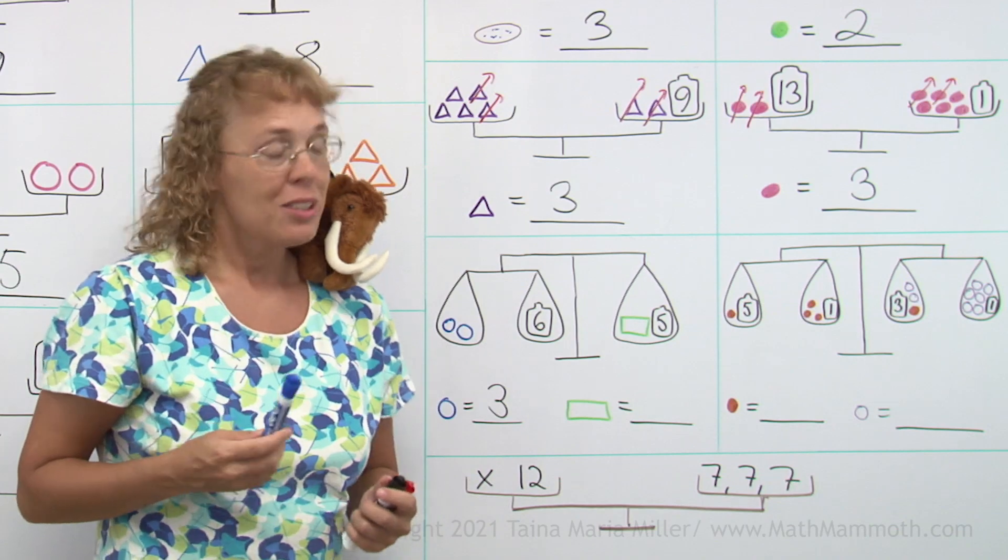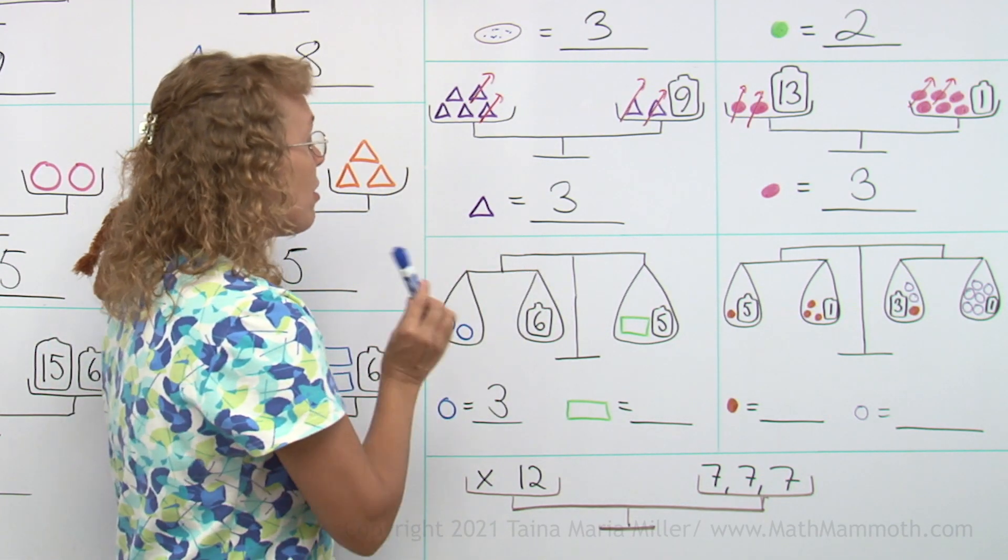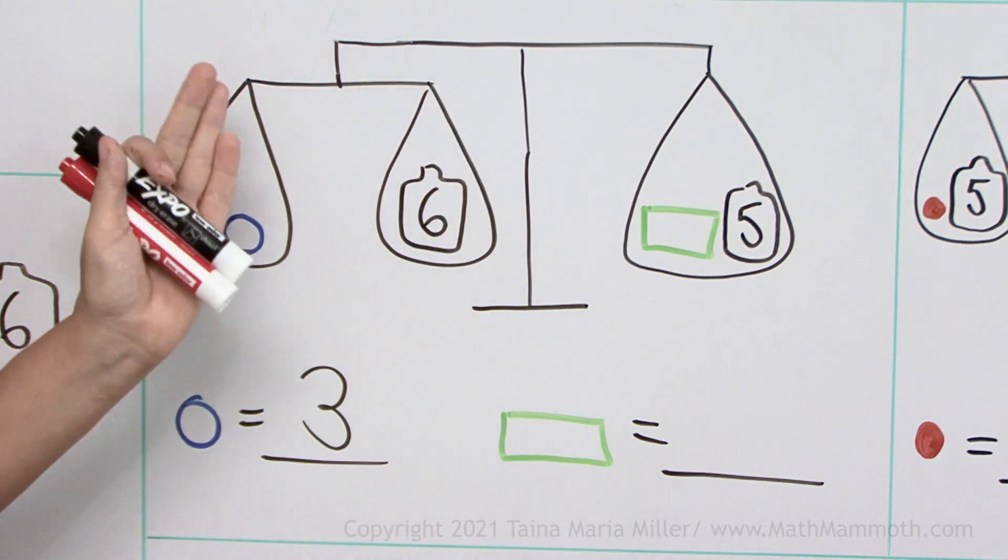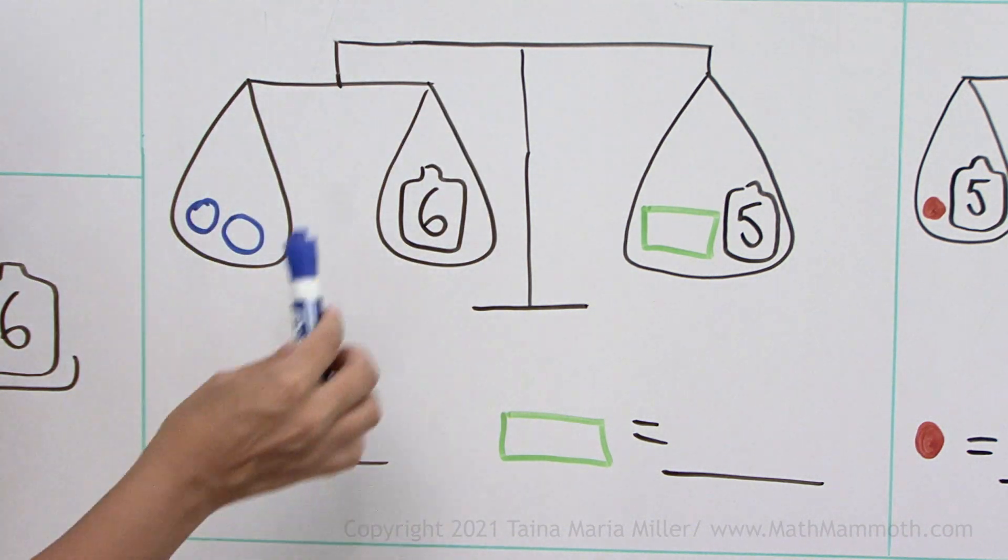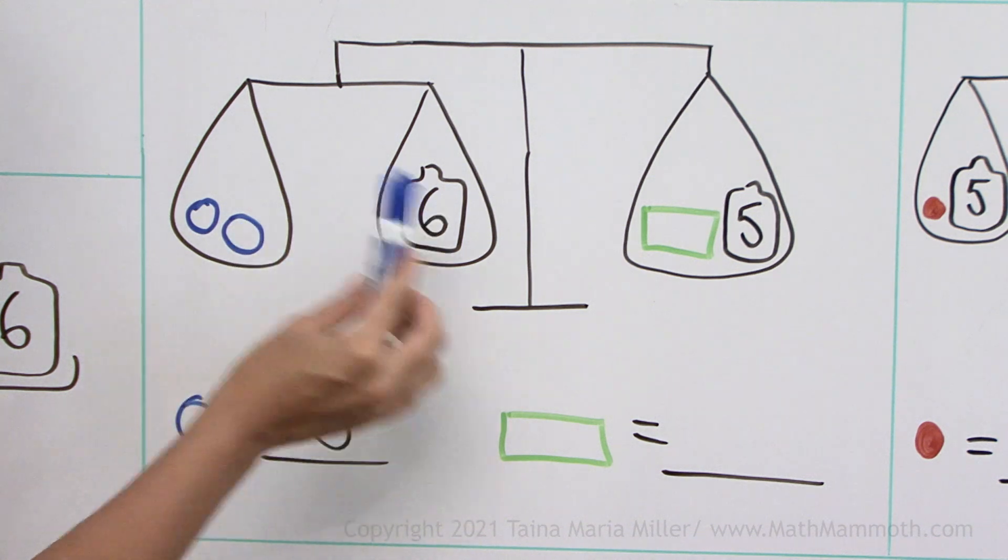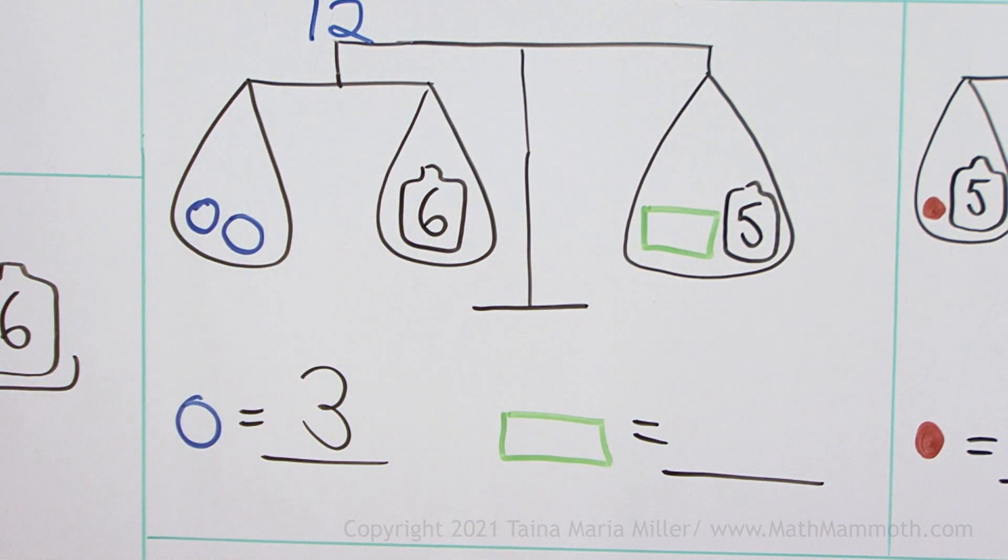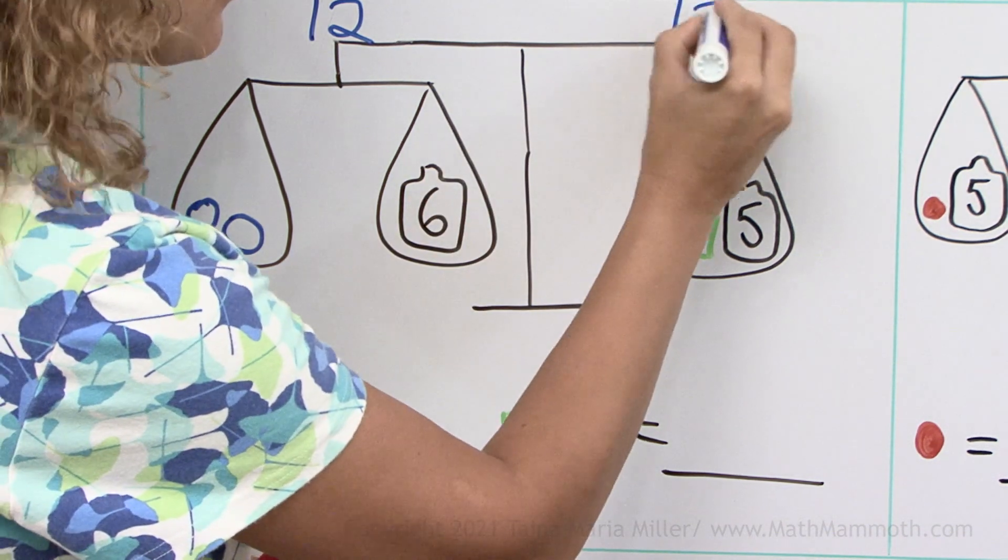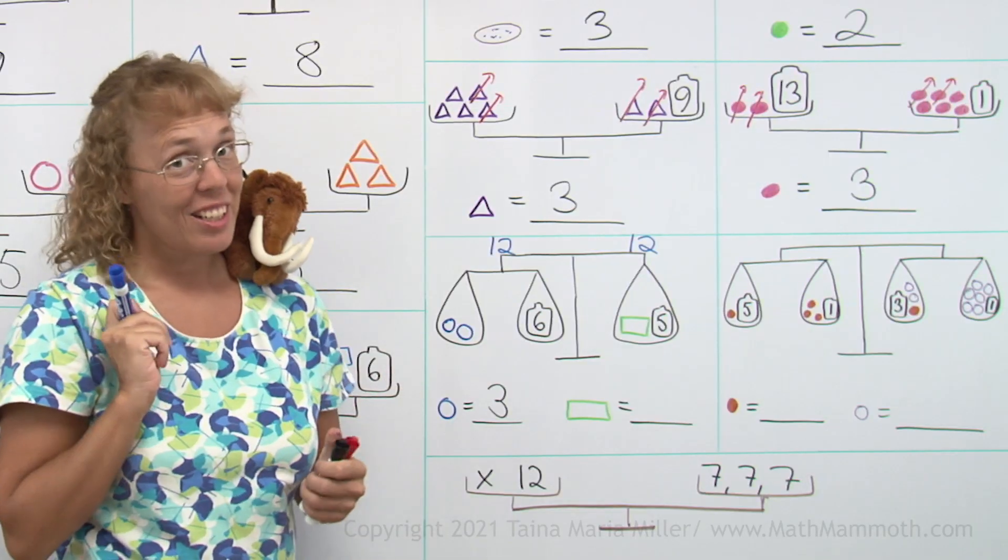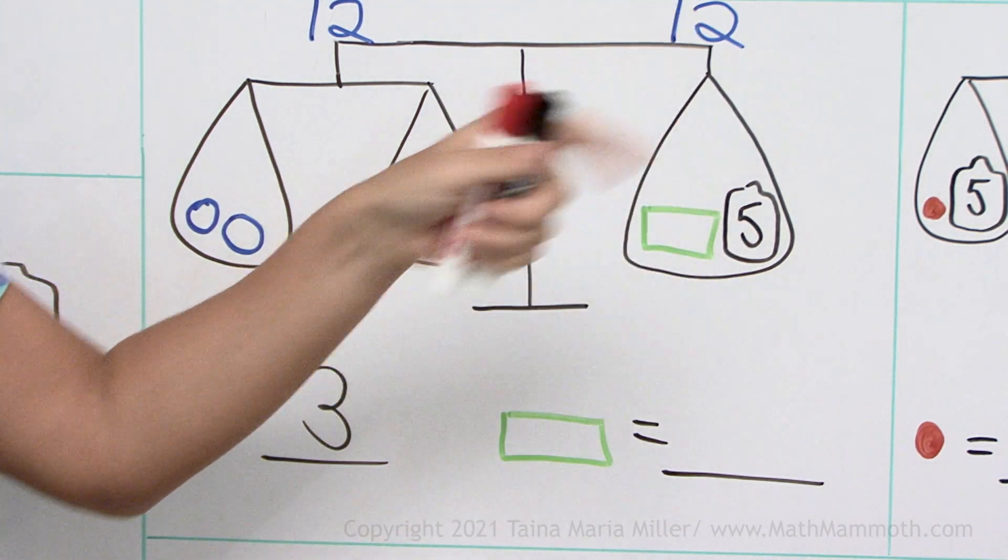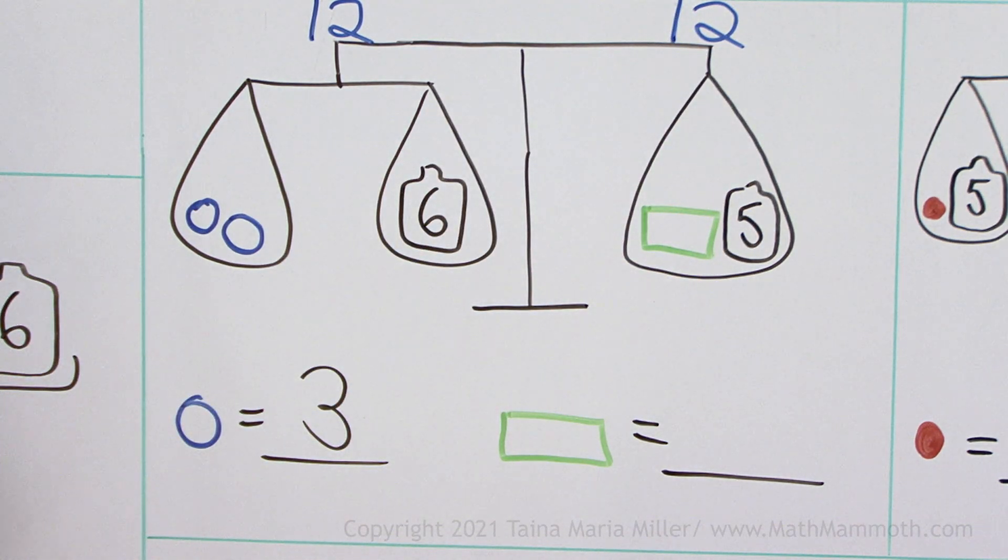And now, when we go to the other side, first let's figure out how much does this whole thing weigh here that is on the left side of the main scale. Here is six and six, so that's twelve. This whole side weighs twelve. And so this side also weighs twelve. So now it's very easy. This rectangle plus five equals twelve. Well, so the rectangle is seven.